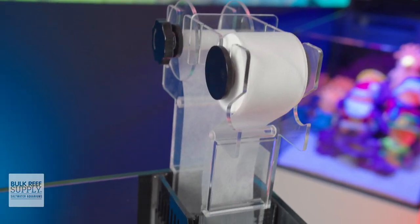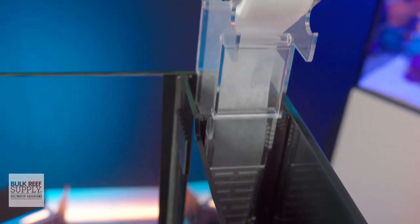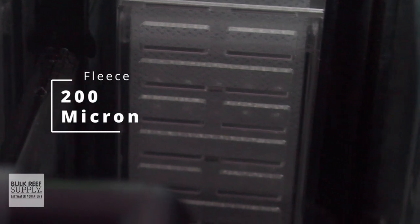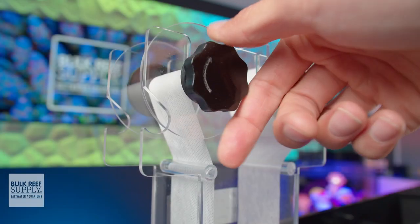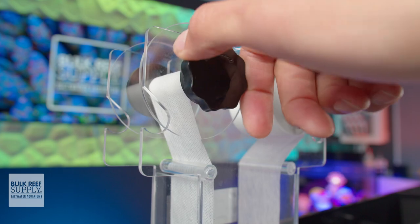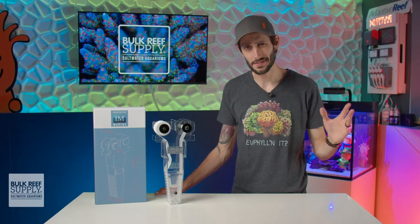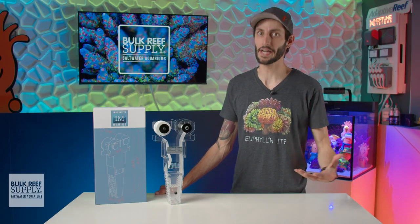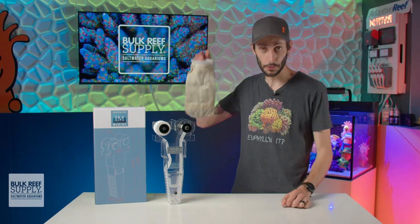As water enters the fleece roller, it'll trap particulates and other debris using 200 micron fleece, and as it gets clogged up, you can turn the dial to roll up the dirty fleece and replace it with fresh fleece. It's super simple and a lot easier to do on a regular basis than clean out a filter sock.